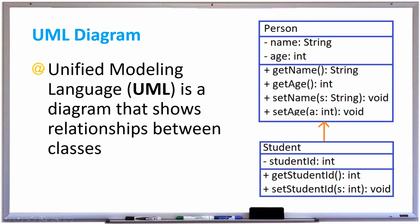Student has the field StudentID, and that's an integer. But it also has the fields name and age. We don't have to write that here because a student is a person.